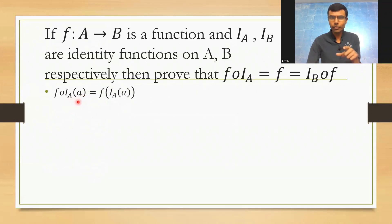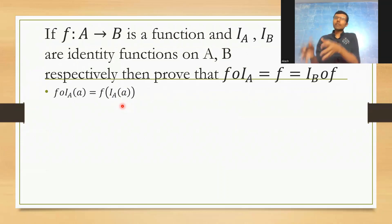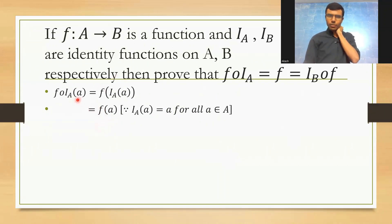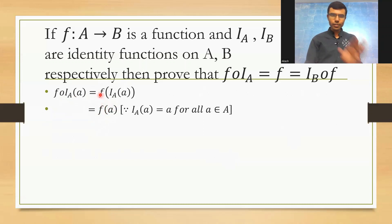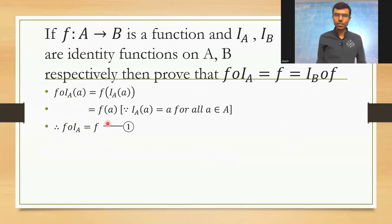f∘iₐ of a can be written as f of iₐ(a), by the basic definition of composition. Now iₐ is an identity function, so iₐ(a) = a for all a belonging to A. Therefore this becomes f(a). So f∘iₐ(a) = f(a). Both functions map to the same element, and since their domains are equal too, f∘iₐ = f. This completes Part 1.